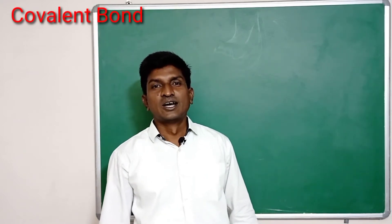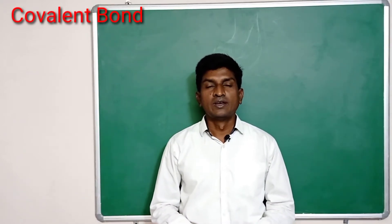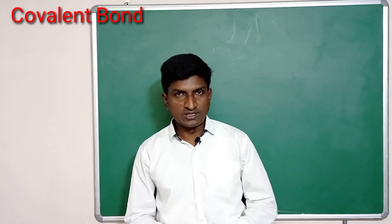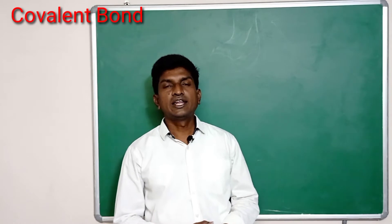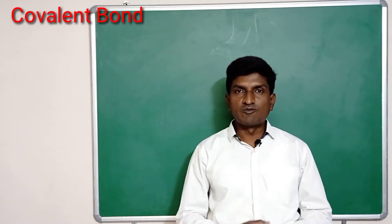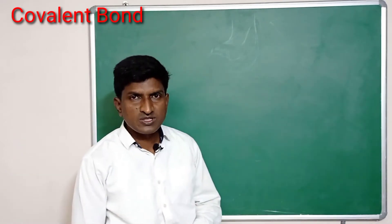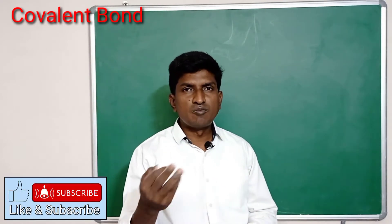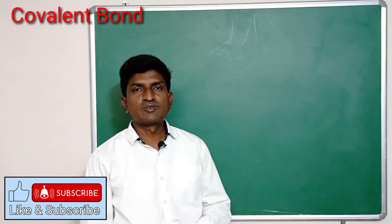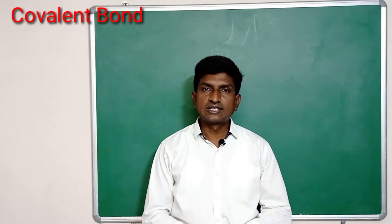Hello students, welcome back. In the previous video we discussed the formation of ionic bond. We know that ionic bond is formed due to transfer of electrons from one atom to another atom. But is it always possible for a bond to form due to transfer of electrons from one atom to another atom?